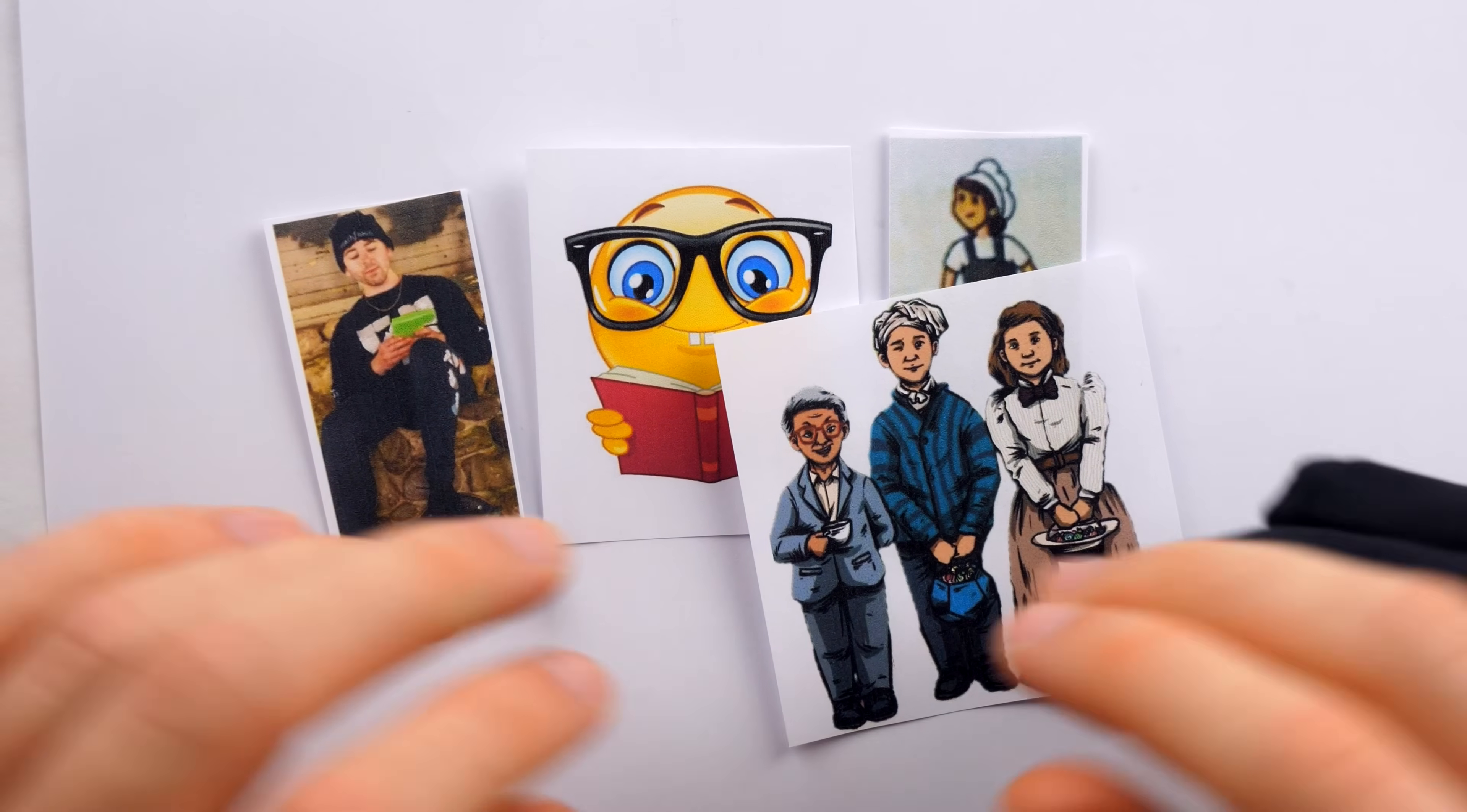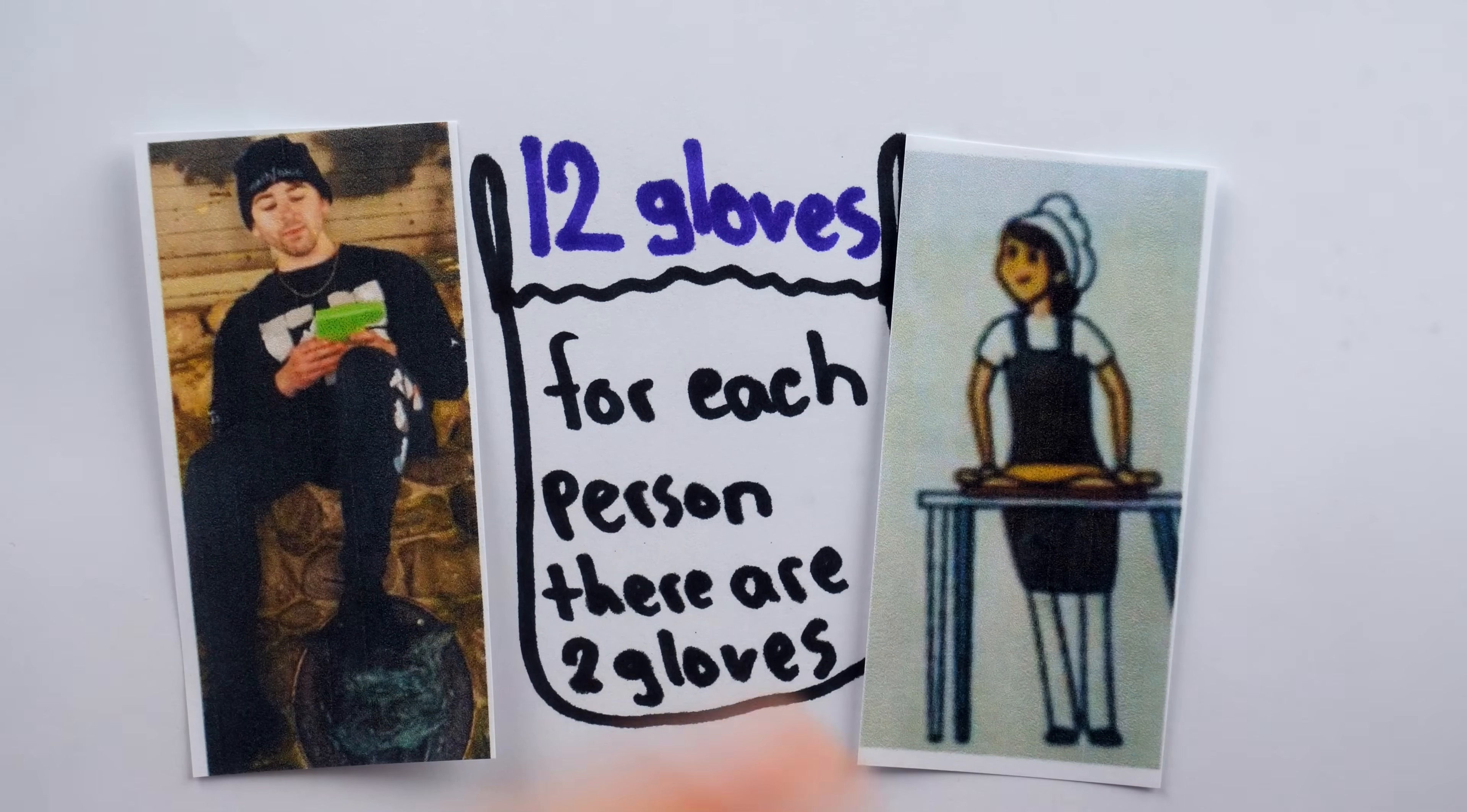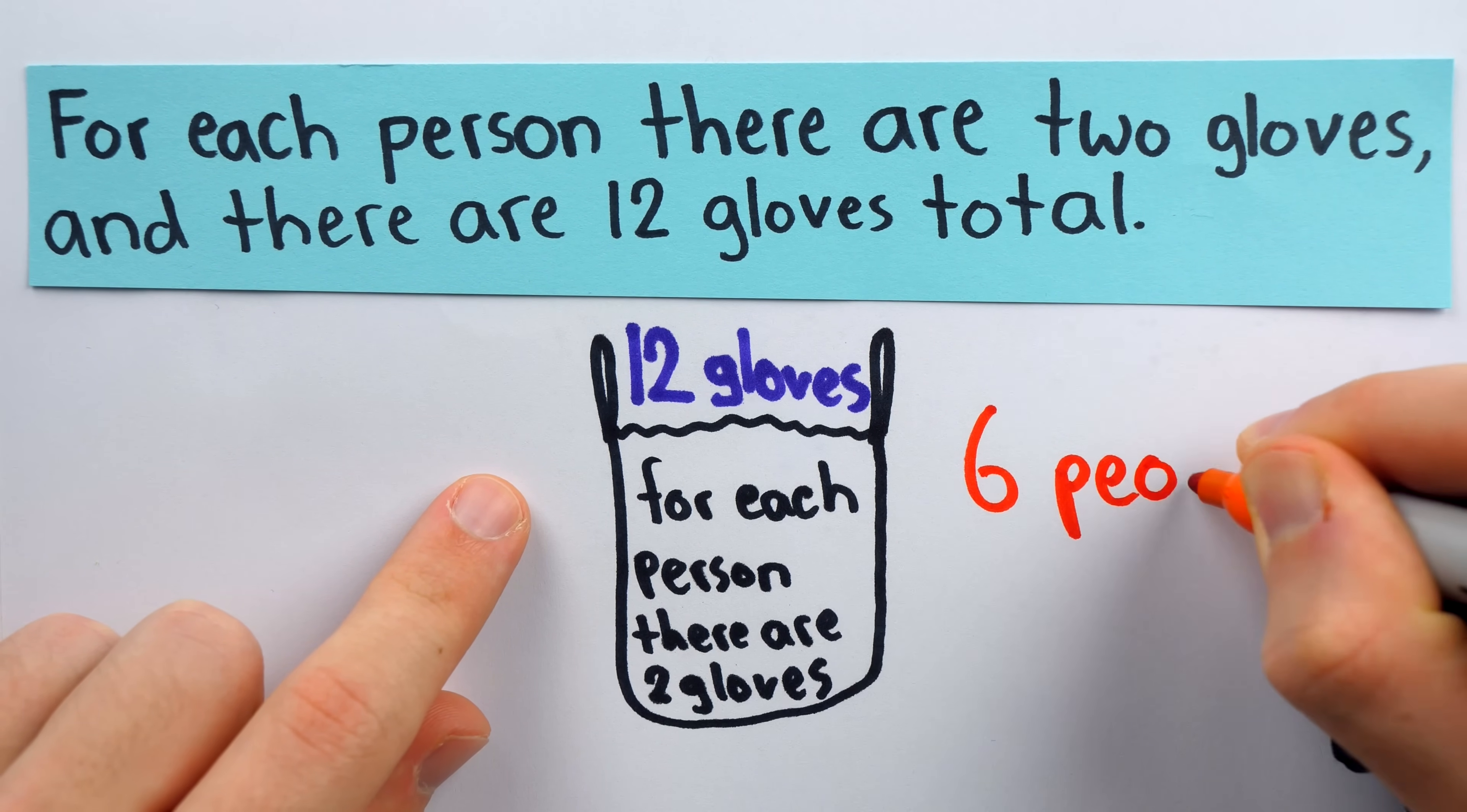We all need a pair of gloves so that our fingers don't freeze. We might check our bag and make sure that for each person there are two gloves. This means there should be 12 gloves total because each person needs their own pair. If we just say for each person there are two gloves and there are 12 gloves total, then obviously there has to be six people.